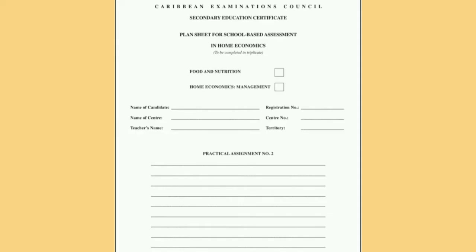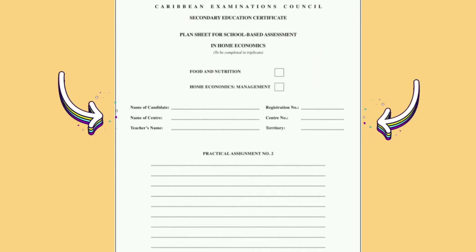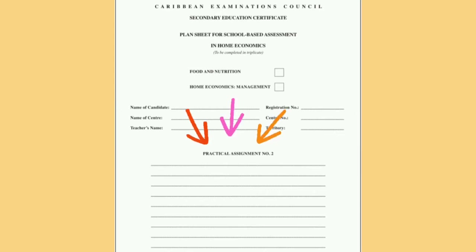What you are seeing now is the first page of the time plan. The first thing you would have to do is select the subject area for which you're writing the time plan — in this case it's Food, Nutrition and Health. The second thing is to fill out basic information about yourself, including your name, the name of the center, your teacher's name, your registration number, your center number, and the territory. Then the final thing is to write the SBA question in its entirety.